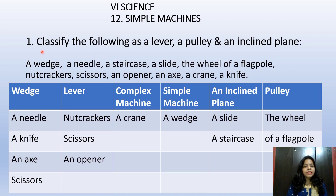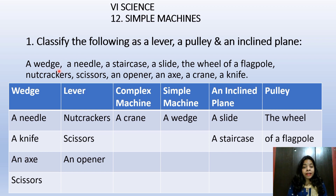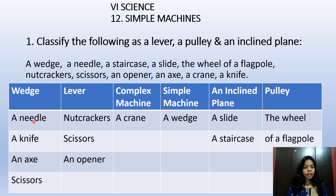First question: classify the following as a lever, a pulley, and an inclined plane. Children, if we see these options there are examples of simple machines, complex machines, and wedge also. So we are going to have many classifications. A wedge is a simple machine. A needle is an example of a wedge.